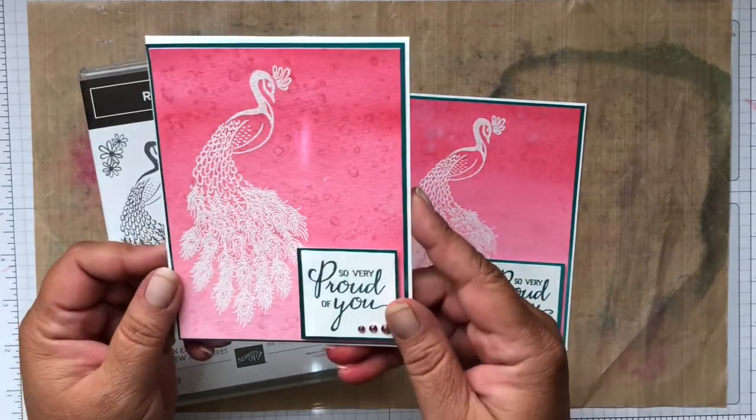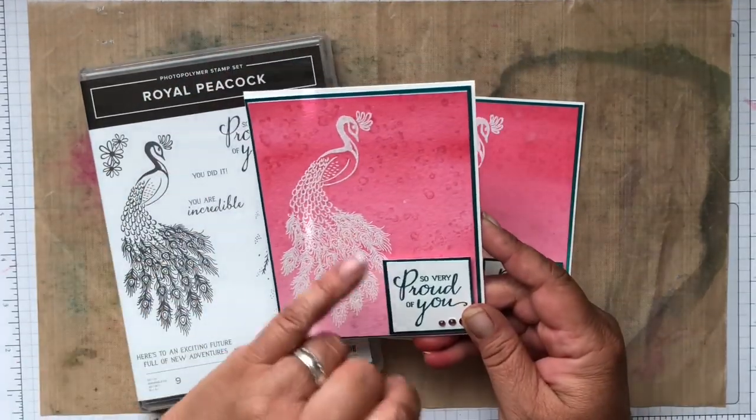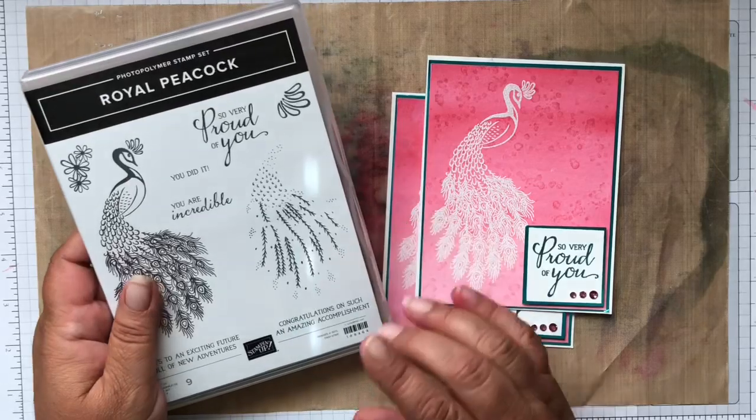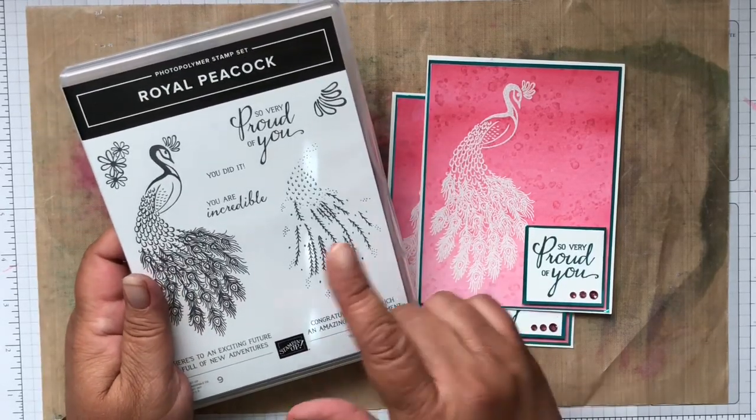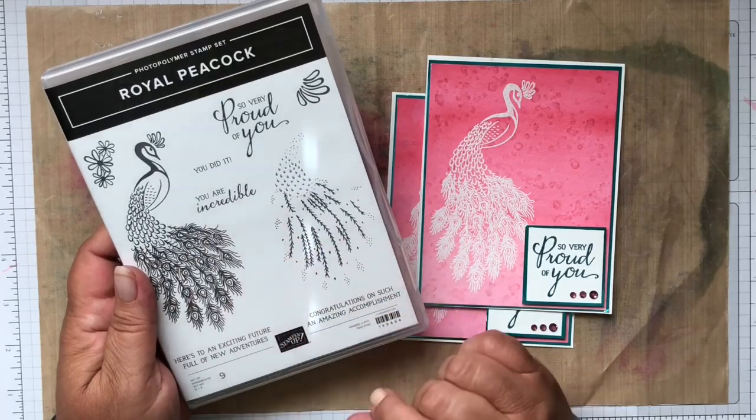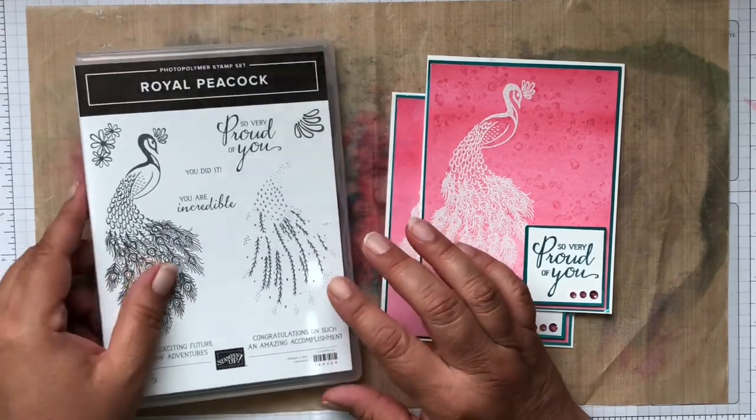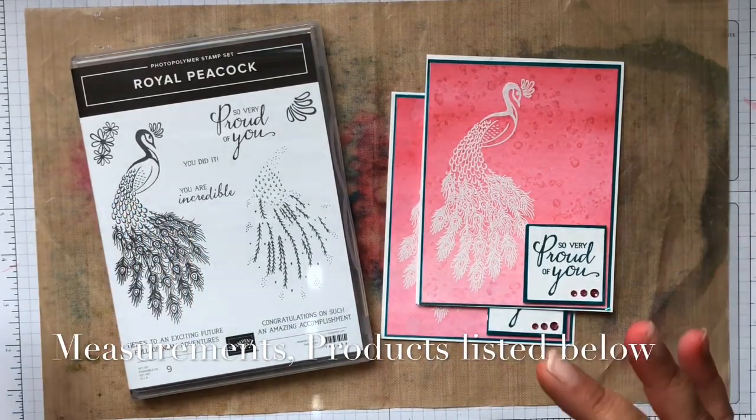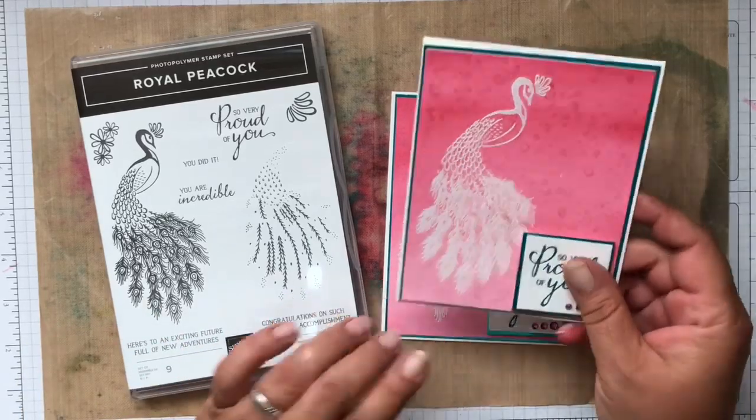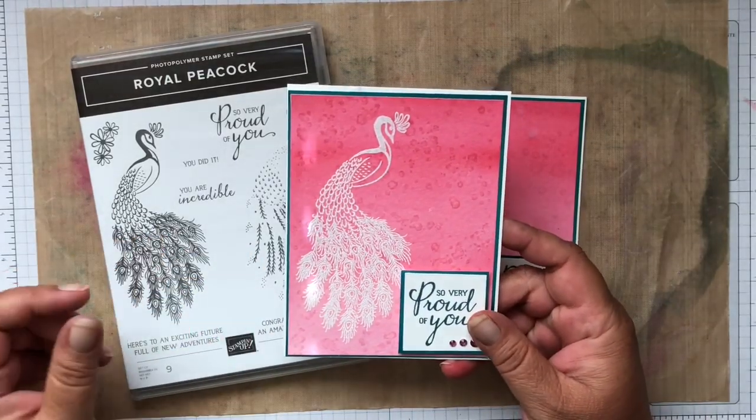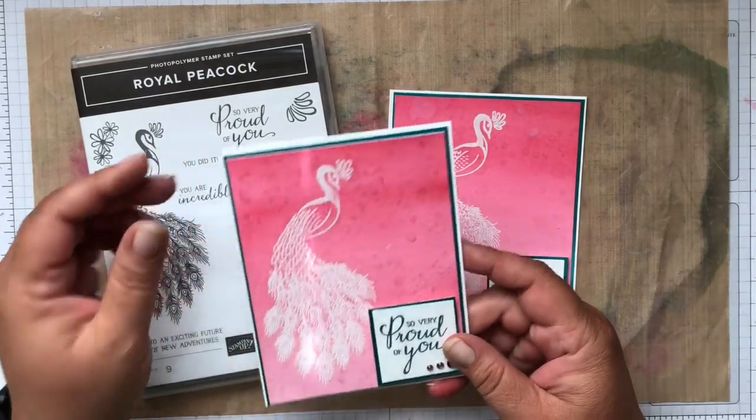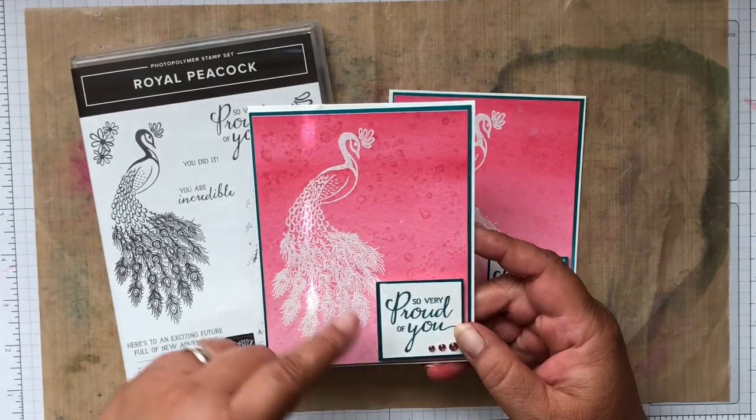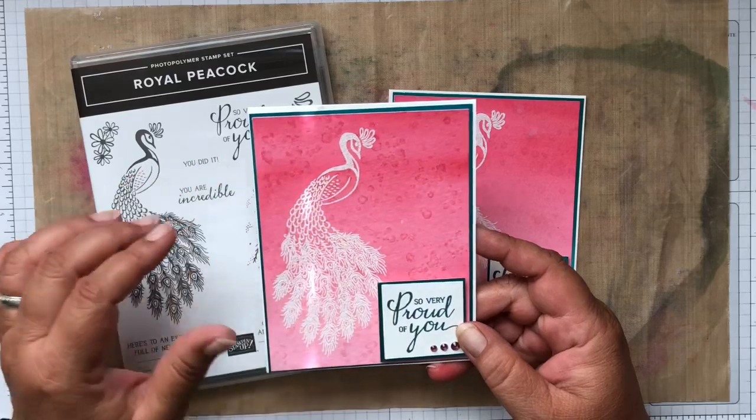Today we're going to be creating this card or recreating this card but we will be using different colors. This is from the new bundle, the Royal Peacock Bundle out of the new catalog from Stampin' Up and I just love these images, these peacocks. When I got this set to play with, I went online and did research trying to find out some different colors of the peacock and I came across a white one which is considered an albino peacock and I thought that'd be perfect and I've been wanting to try this little technique.